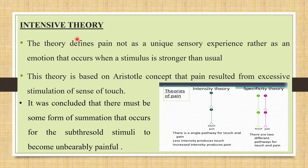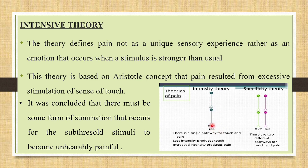The first theory is the intensity theory, put forward by Herb in 1874. This theory defines pain not as a unique sensory experience but as an emotion that occurs when a stimulus is stronger than usual. Based on Aristotle's concept that pain results from excessive stimulation of the sense of touch, it concluded that summation of subthreshold stimuli can become unbearably painful. Herb described that touch and pain share a single pathway — less intensity produces touch sensation and increased intensity produces pain sensation.